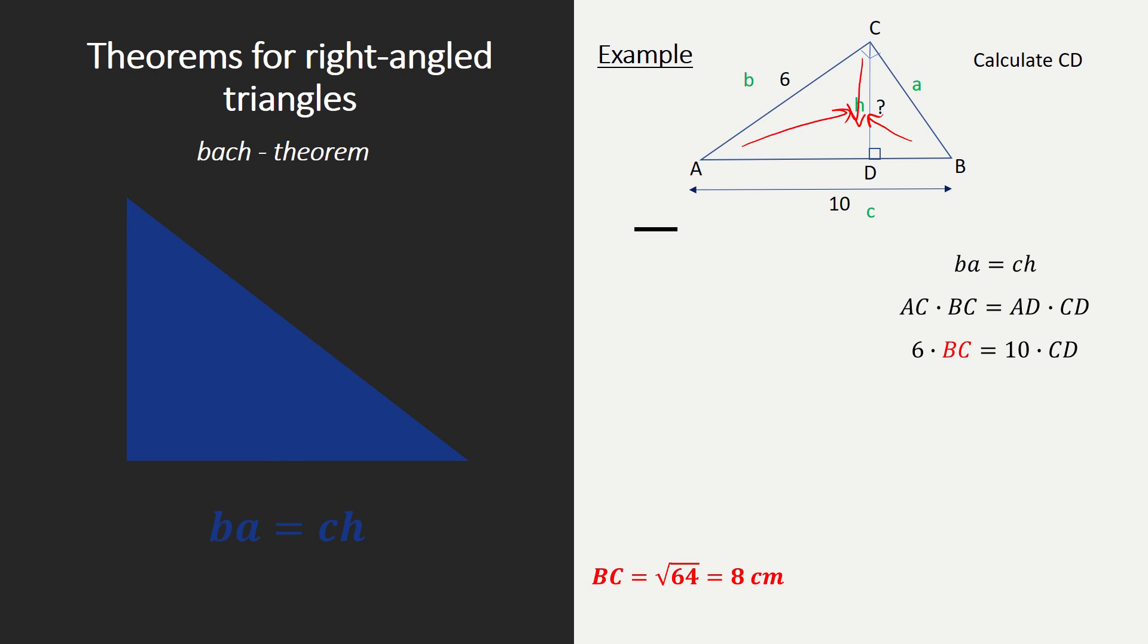And that's when our Pythagorean theorem helps us. Because we can calculate what BC is. Because we know that ABC is our right-angle triangle where we can use a Pythagorean theorem. So AC squared plus BC squared is the same as AB squared. So we use a Pythagorean theorem. And we're going to fill everything in. So 6 squared plus BC squared equals 10 squared is 36 plus BC squared equals 100.